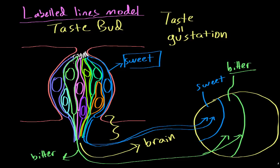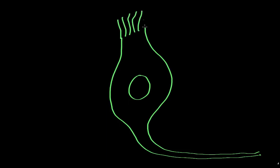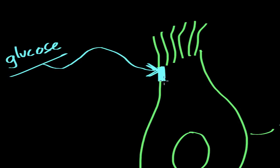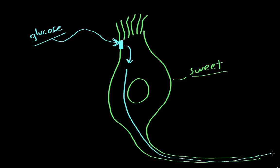Let's look at an individual taste cell. Here's the axon, the cell nucleus, and little hairs that project out into the tongue. Let's say this is a sweet taste cell — it's sensitive to sweet molecules. Imagine we have a molecule of glucose; you're eating cake. Some glucose hits the tongue and finds its way to a sweet cell. The cell has receptors in the membrane that are sensitive to glucose and other sweet molecules. When glucose binds, it triggers a cascade of events that eventually causes the cell to depolarize and send an action potential down its axon into the brain.